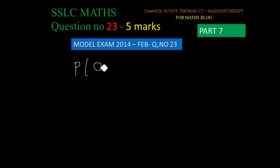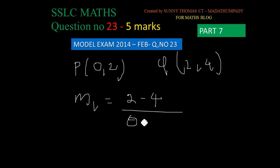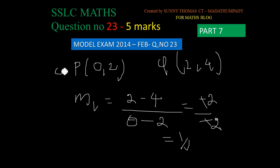P is (0,2) and Q is (2,4). Using the slope formula: y2 minus y1 divided by x2 minus x1 gives us 4 minus 2 divided by 2 minus 0, which equals 2 divided by 2, which equals 1. So the slope m equals 1. This is the first question answer.